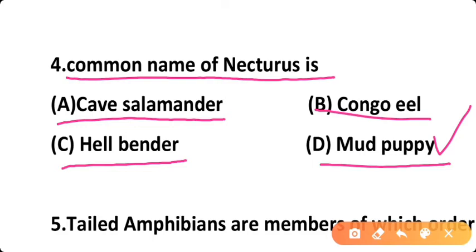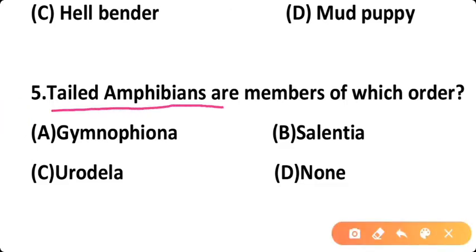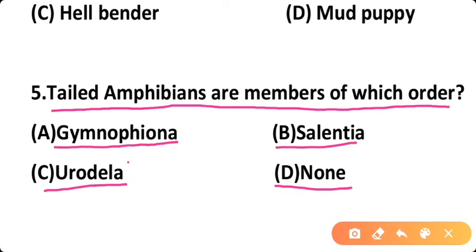Question five: Tailed amphibians are members of which order? Option A: Gymnofiona, Option B: Salientia, Option C: Urodella, Option D: None of these. The correct answer is Option C — tailed amphibians belong to order Urodella. The example of Urodella is salamander.